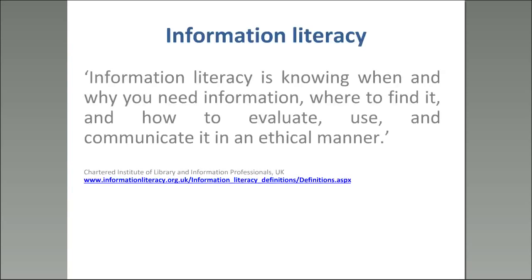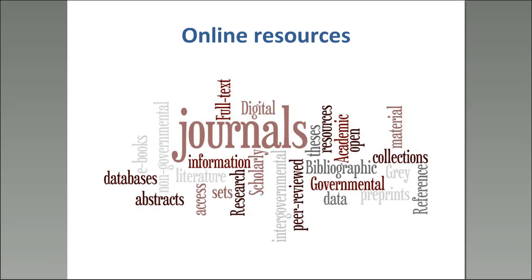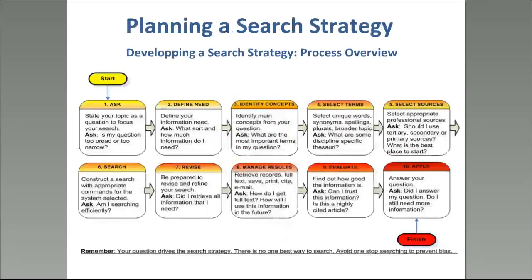Today we're talking more about search strategies. So what is information literacy? It's about knowing when and why you need information, where to find it, and how to evaluate, use, and communicate it in an ethical manner. The problem is not finding information — there is an avalanche of information online: journals, texts, databases, open data, scientific research journals. But how do we know what to choose, where to look, and what is appropriate to use?